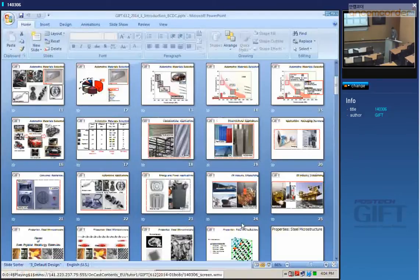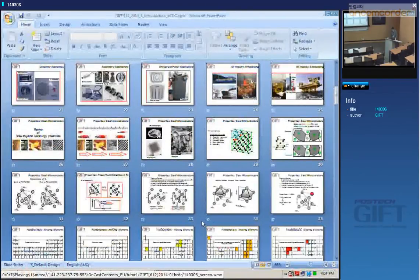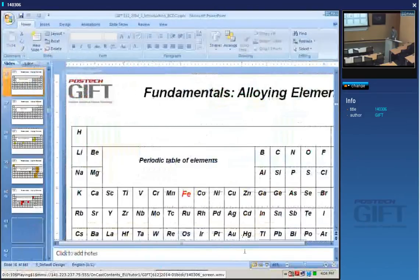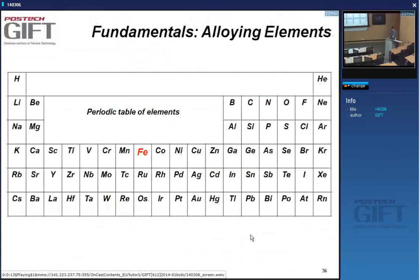Let us continue where we left off. I had introduced reasons why steel is an important material in engineering, and we had explained that in these introductory lectures we would be focusing on general physical metallurgy of steel. So the stage was set to go into the products in more detail.